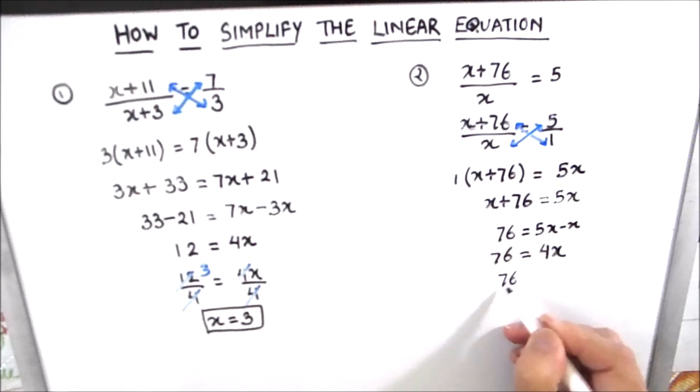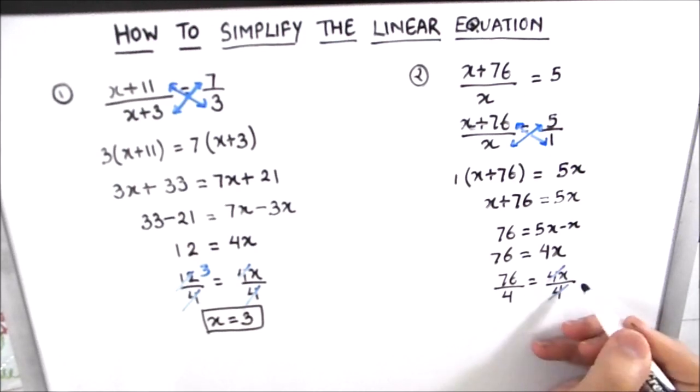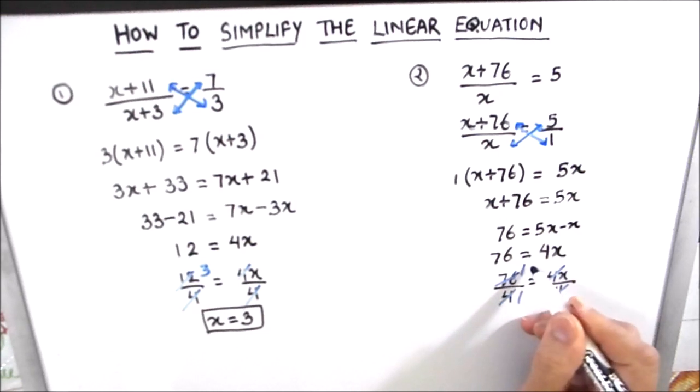For finding the value of x we will divide both the sides by 4, so 4x divided by 4 is equal to 76 divided by 4. So these two 4s get cancelled, 4 times 1, and 4 times 19.